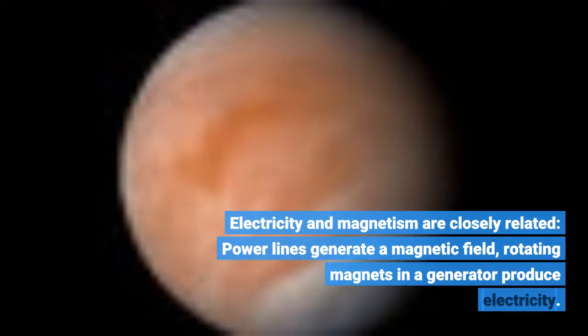Electricity and magnetism are closely related. Power lines generate a magnetic field, rotating magnets in a generator produce electricity.